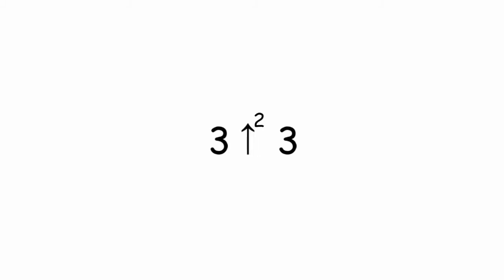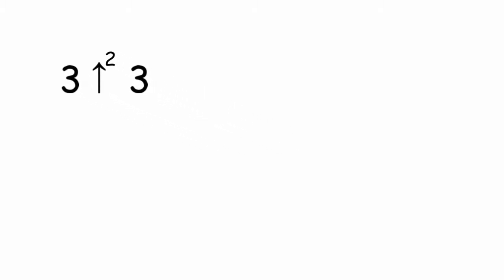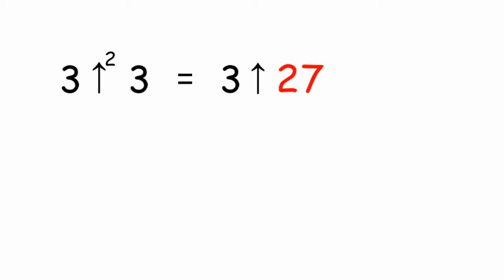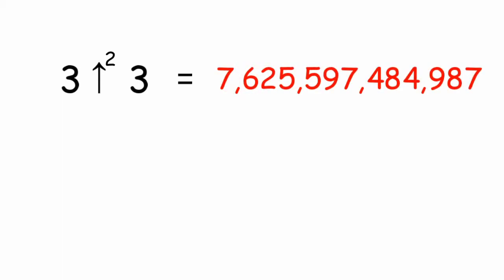3 double arrow 3 can also be written like this. 3 double arrow 3 is equal to 3 arrow 3 arrow 3. 3 to the power 3 is equal to 27. 3 to the power of 27 is 7.6 trillion.